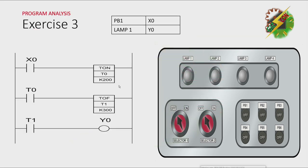This will be my answer. Now let's try to analyze this program. When we press PB1, X0 will be energized. And because X0 is energized, T0 will be activated after 2 seconds.